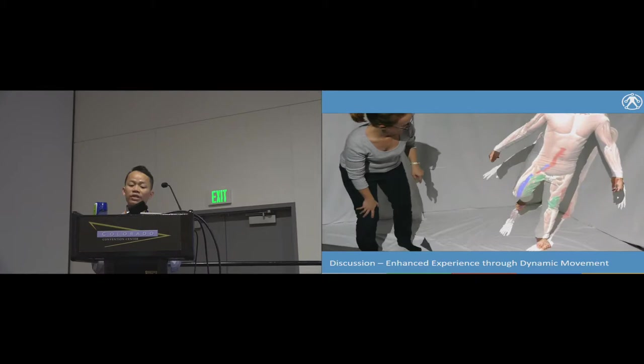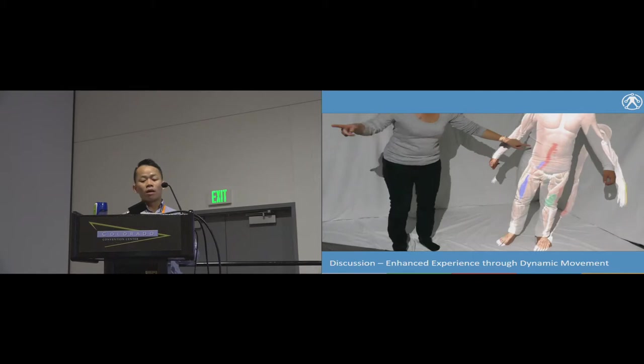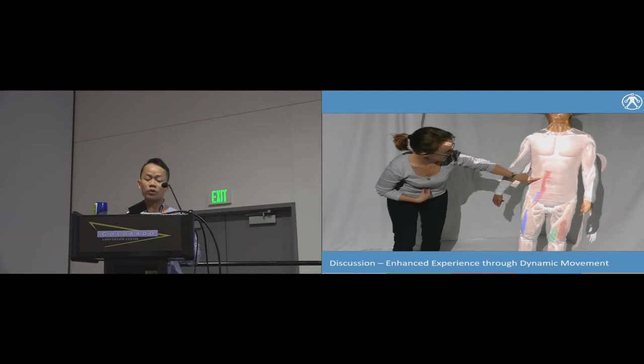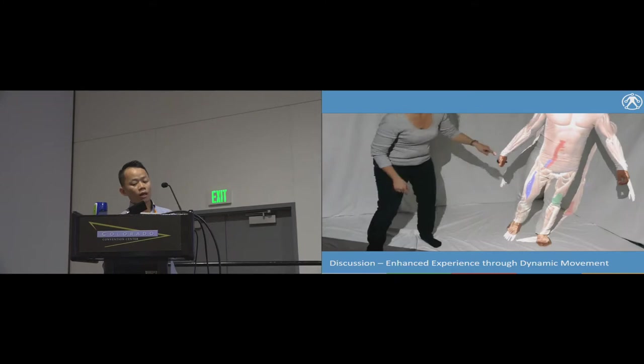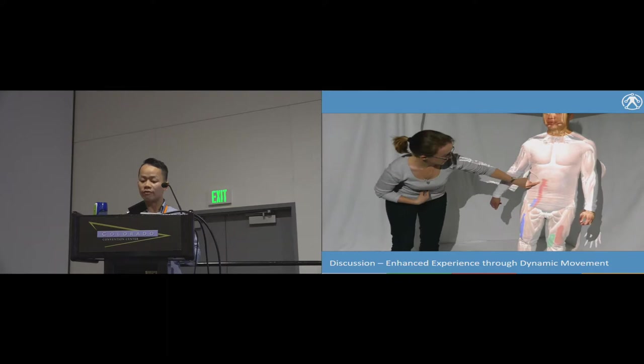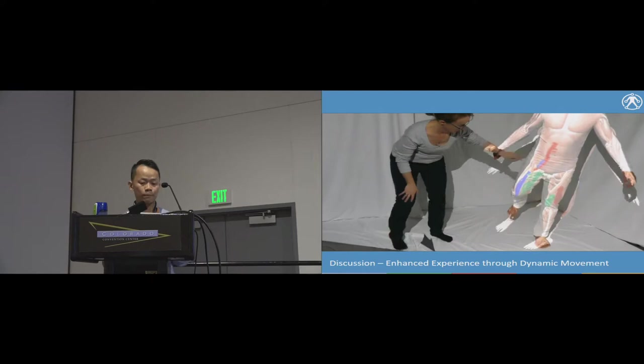We ran coding analysis on the observation notes and group discussion transcript, and we found the following themes. The students found it extremely useful being able to see dynamic movements of anatomical structures, which is one of our design goals. As can be seen here, Tamara is pointing at the top of the Sartorius muscle when Joshua was bending forward while kicking. The students commented that they prefer augmented studio because it provides more relevant information with the ability to map 3D models to physical movements.